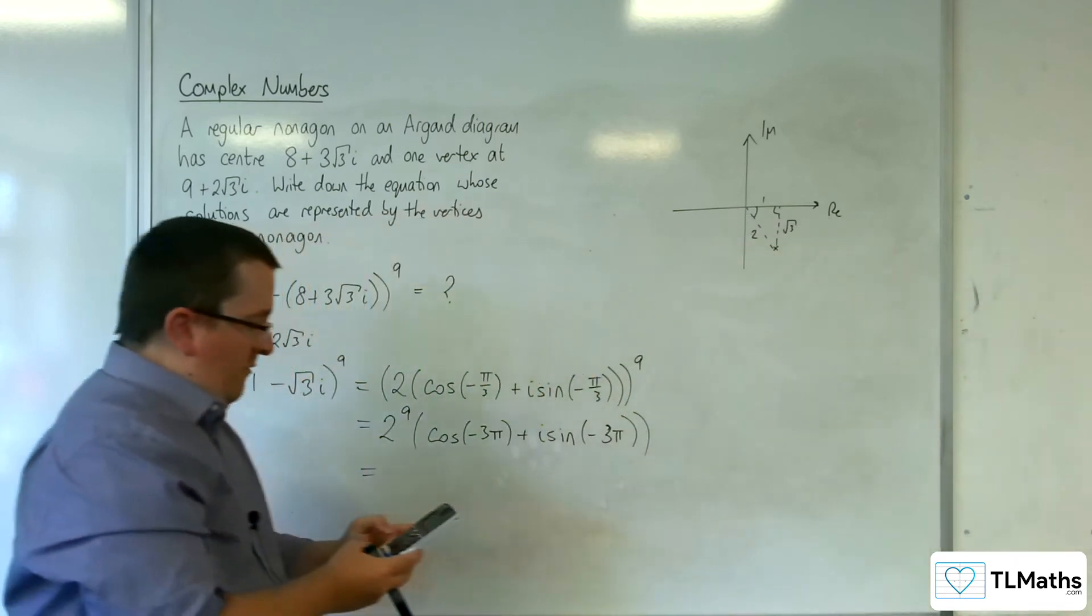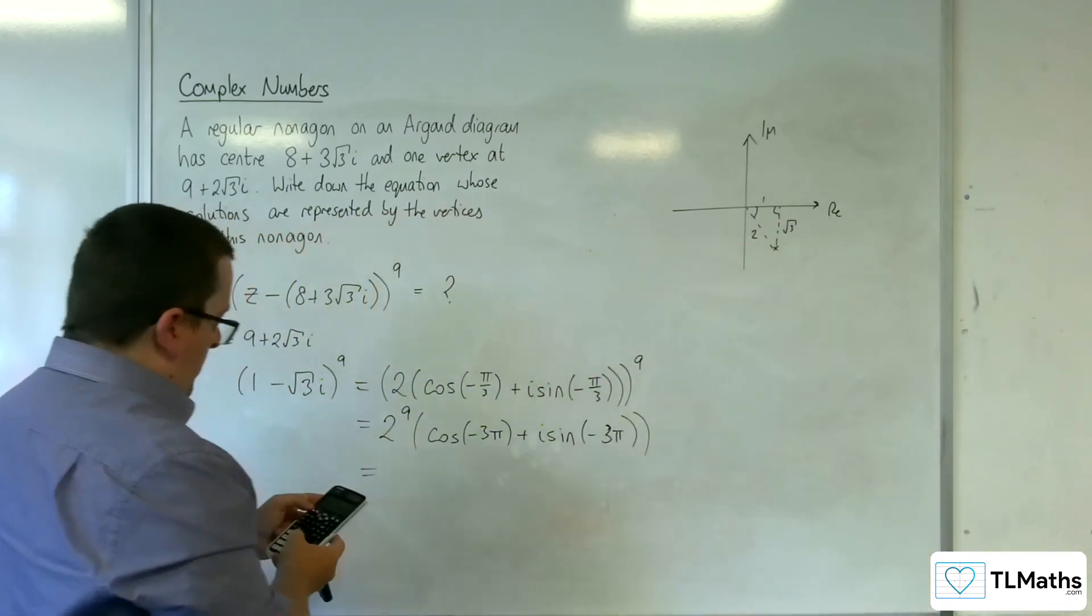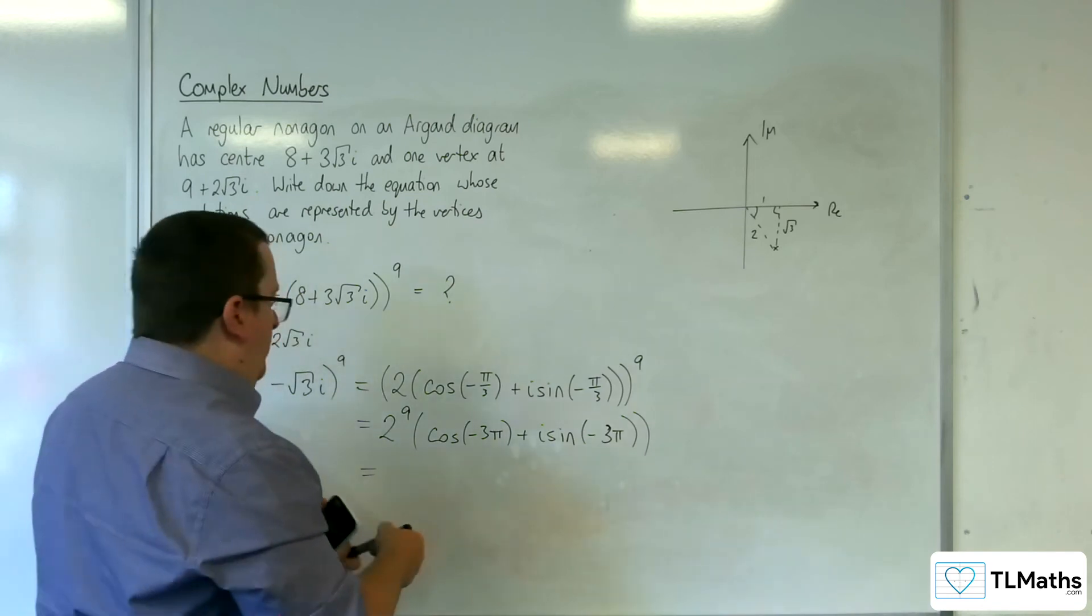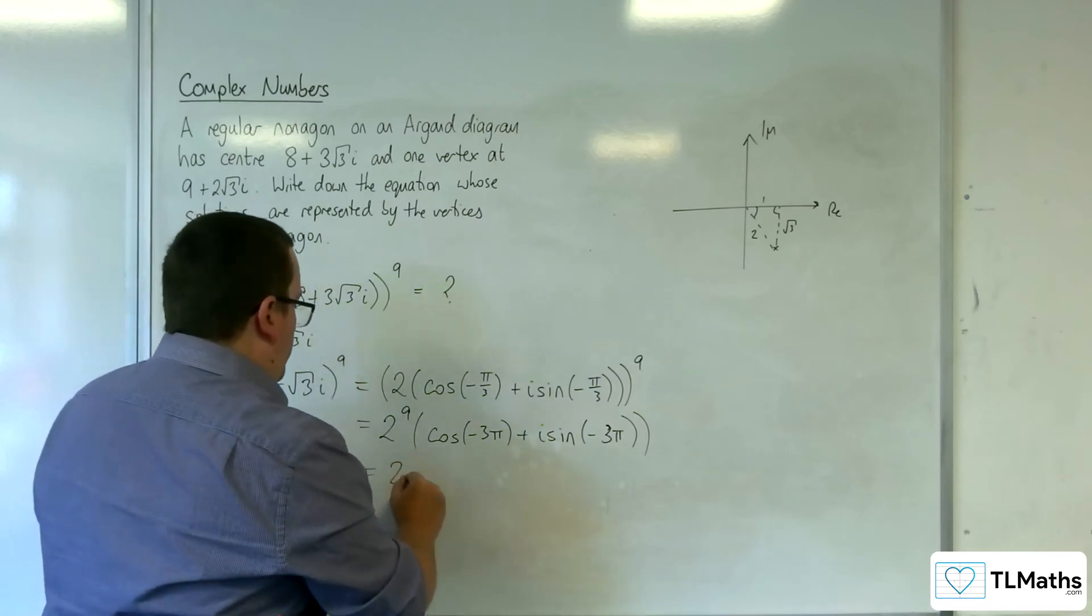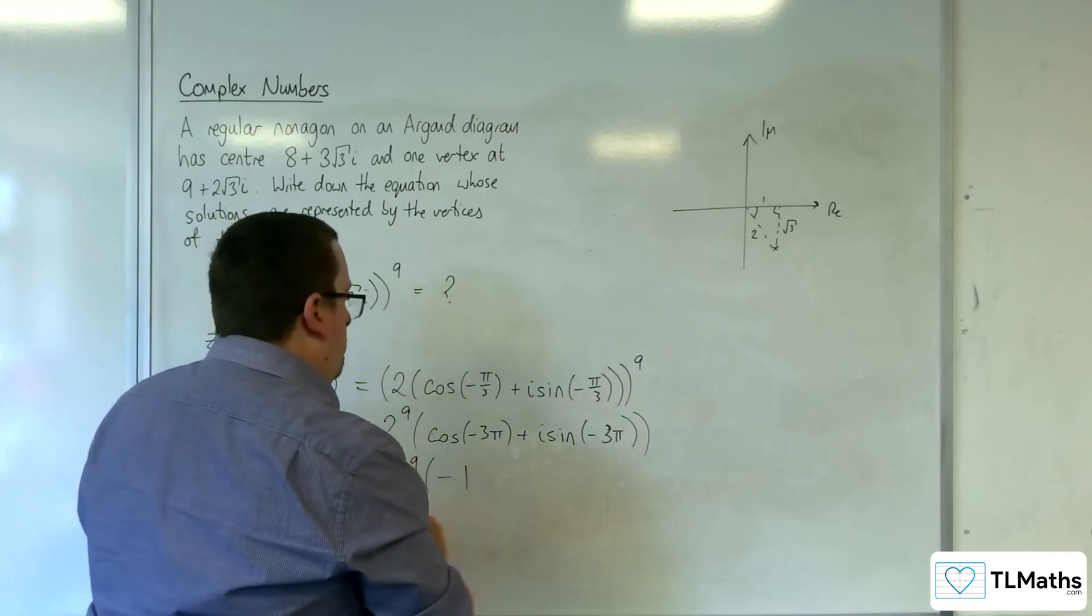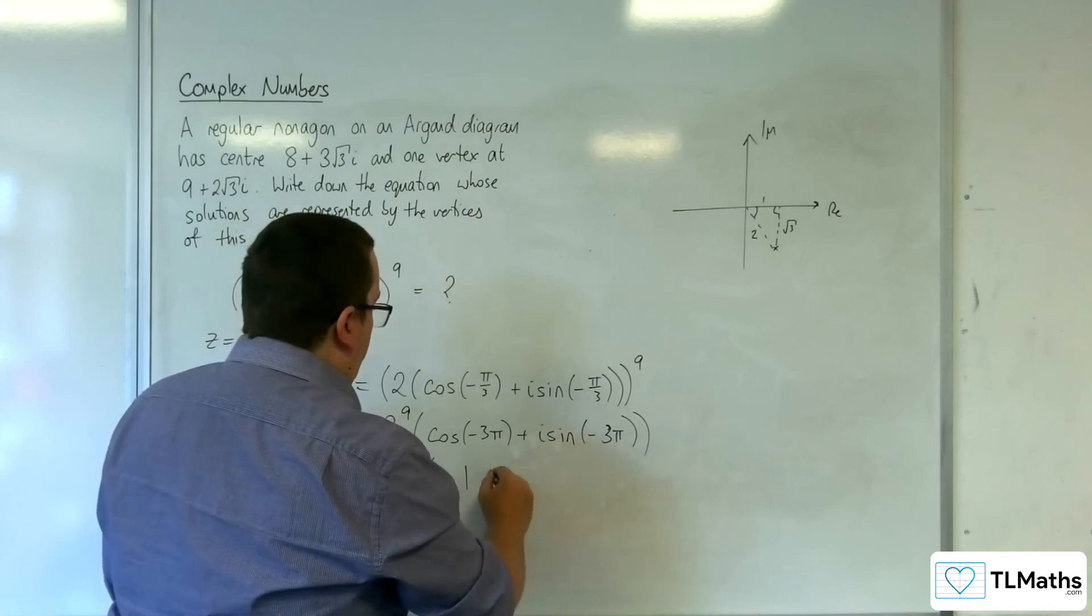So cos(-3π) is -1, so we've got 2^9 × (-1), and sin(-3π) is just going to be 0.